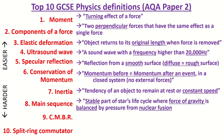The last couple are quite tricky. Main sequence is a stable part of a star's life cycle where the force of gravity is balanced by pressure from nuclear fusion outwards.